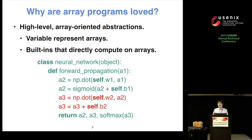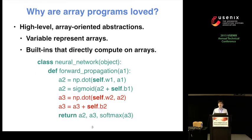The output for the third layer is also computed by a matrix multiplication. This function demonstrates two important characteristics of array programs. The first is that each variable represents an array — information such as data type, size, and dimension are captured by abstract data structures. Second, programmers can directly use arrays to do computation, which allows them to focus on the logic of algorithms instead of the tedious details of each computation.